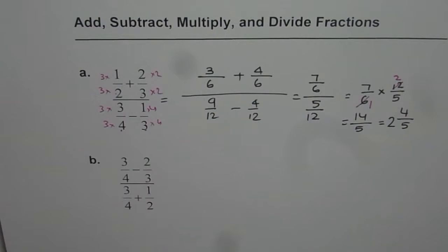So that is how you do all these operations: addition, subtraction, multiplication, division. Now this one. 3 over 4 minus 2 over 3 divided by 3 over 4 plus half.